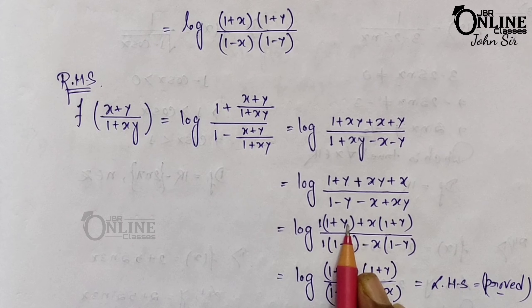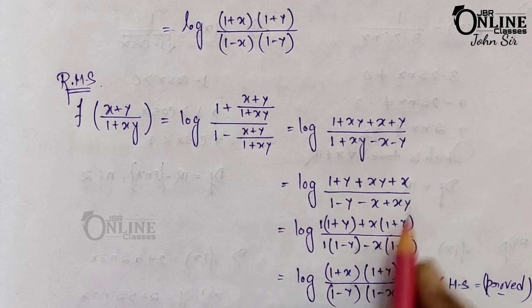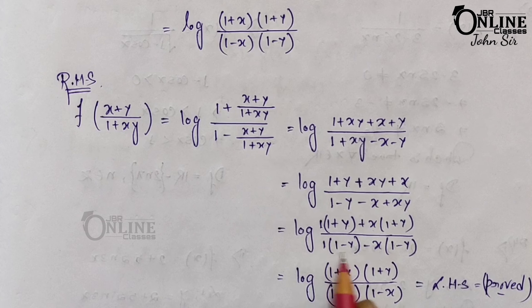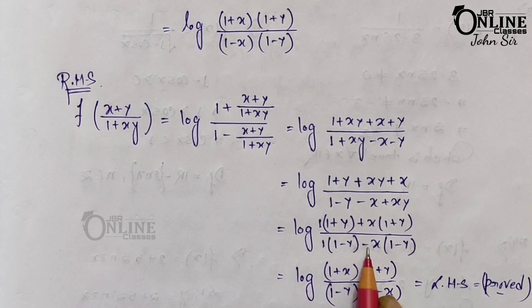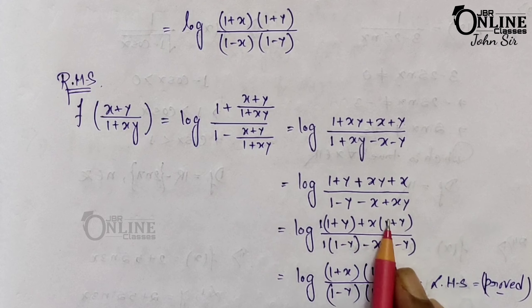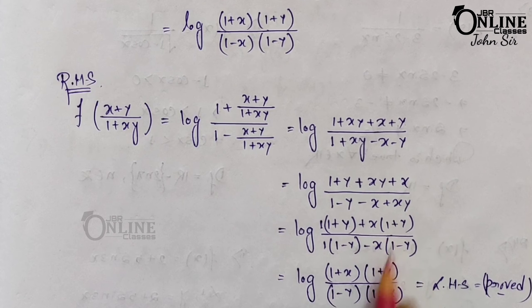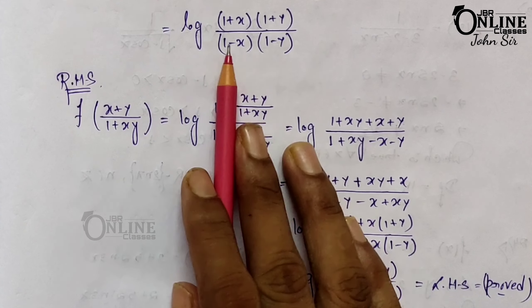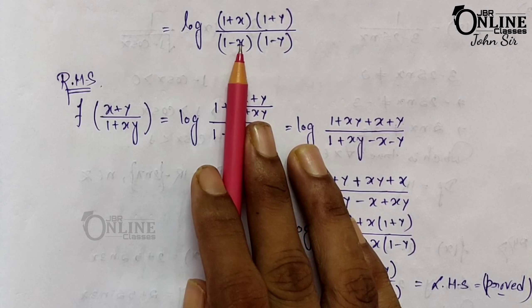Rearranging: in the numerator, take 1 common giving (1+y), and take x common also giving (1+y), so the numerator is (1+x)(1+y). In the denominator, take 1 common giving (1−y) and take −x common also giving (1−y), so denominator is (1−x)(1−y). This equals the left hand side, so RHS = LHS — proved. Now sum number 22: find the domain of the following functions.